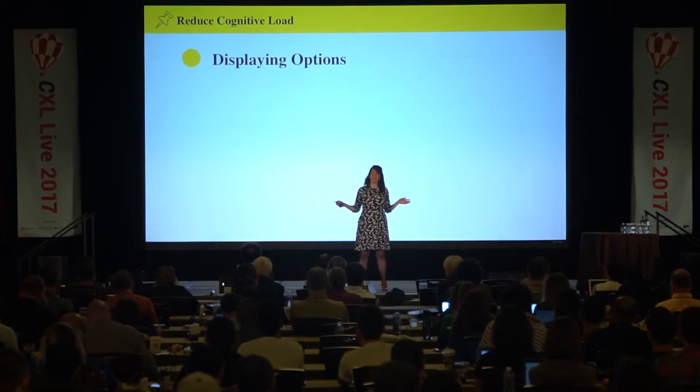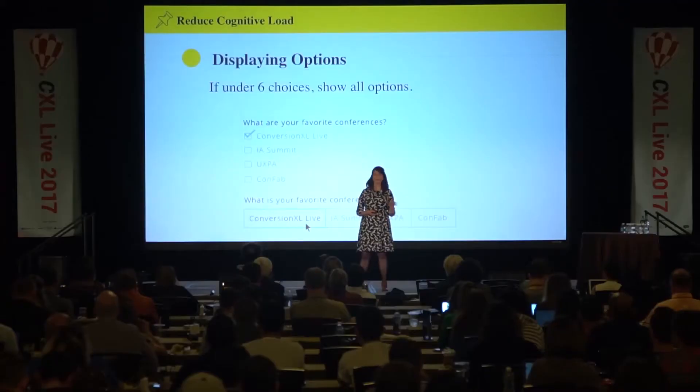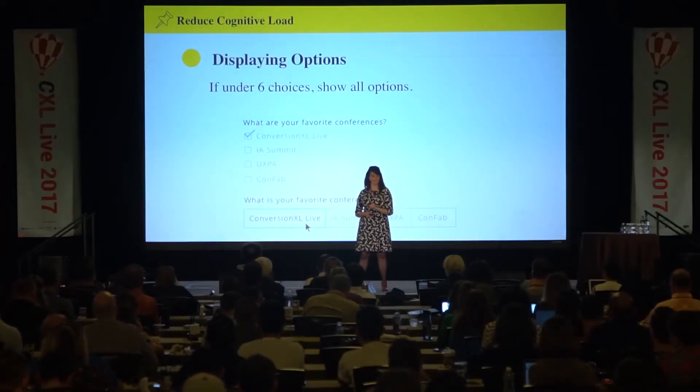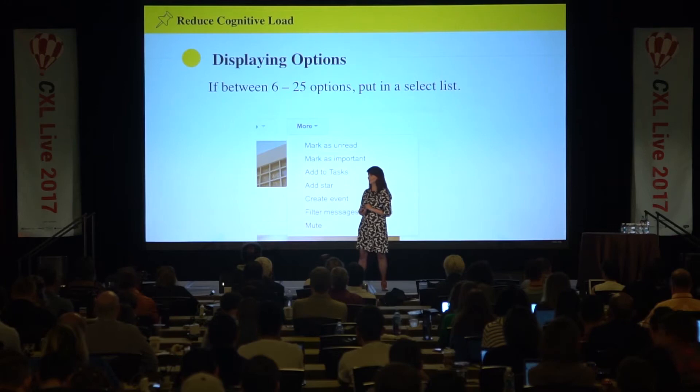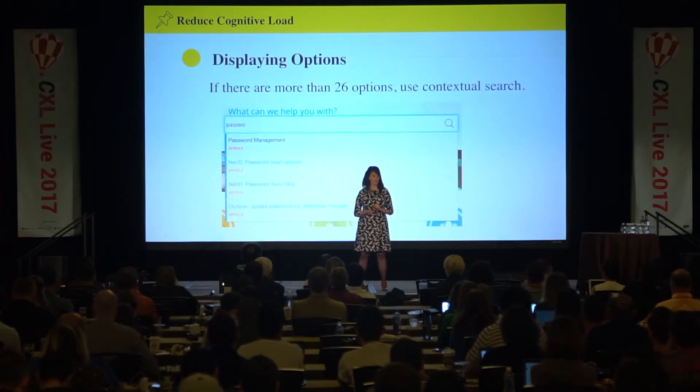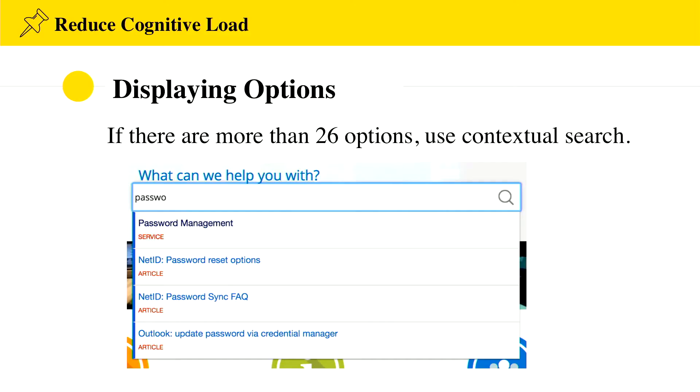Forms aren't all about buttons and labels — sometimes you have options that people need to choose from. We can process about five items in our brain at the same time. So if you have less than six items, display all those choices on the form to help reduce completion times. If you have between six and 25 items, put in a select list or dropdown. And if you have over 26 items, use contextual search, which lets users narrow down their options within context.